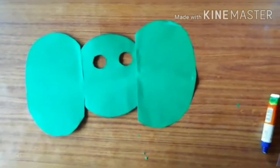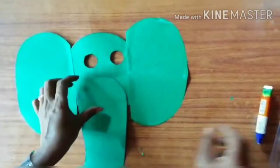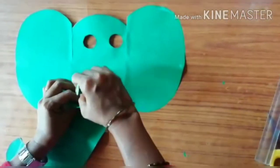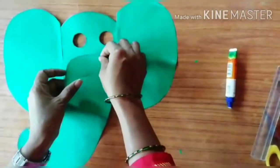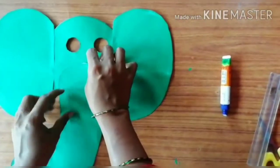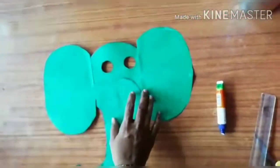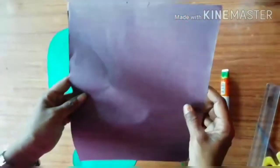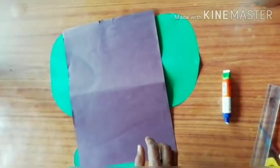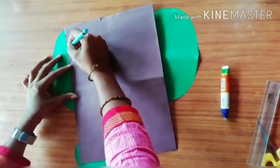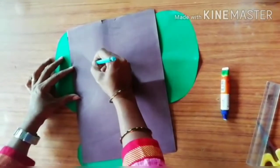And now we are going to stick the trunk as well. Make sure that you make one hole behind the trunk so that your baby can breathe. And now we are going to take another paper. I am going to take this brown color paper and will be sticking it in the center of the ear.